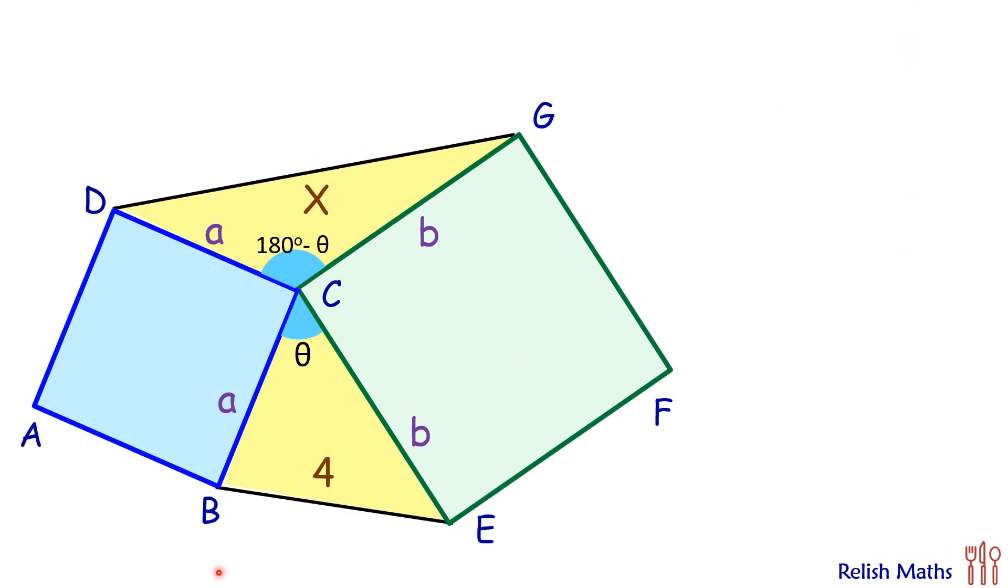Now let's solve it without using the area of triangle formula as ½ab sin θ. In fact, we will derive that formula here. For area of triangle BCE, what I'm doing is drawing a perpendicular from vertex B onto base CE. So area of triangle BCE is half of base times height.